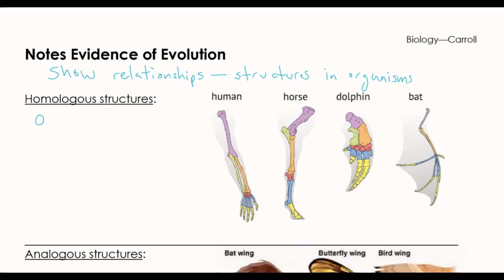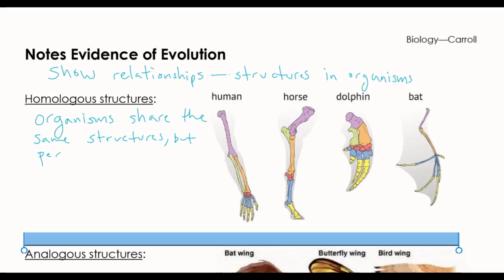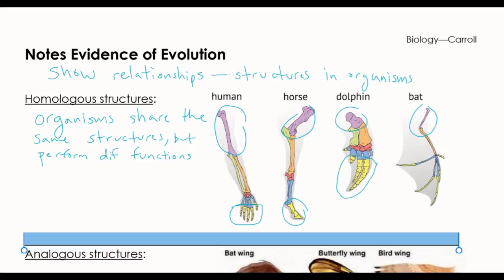So the first thing is a homologous structure. Basically what that is, is when organisms share the same structure but they actually perform different functions. When you look at the human, the horse, the dolphin, and the bat, you can see this purple part — that is all the same bone in all these different animals' arms. We obviously don't use ours the same way a horse or dolphin does. Those are like your fingers. A dolphin uses its flippers or a bat would use its wings, but they are all the same structure, so we can compare these and see that maybe we did come from a similar thing.